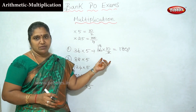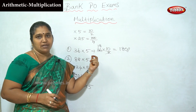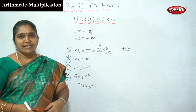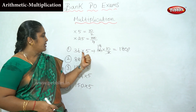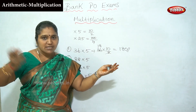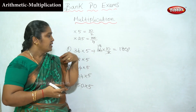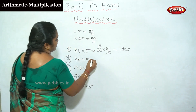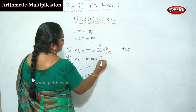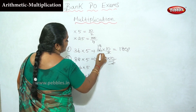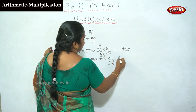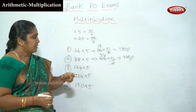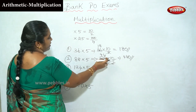We multiply by 5 using this method. For example, 88 into 5: use 10 by 2, so 88 into 10 is 880, divided by 2 is 440. For 124 into 5: 124 into 10 is 1240, divided by 2 is 620. Add zero: the answer is 620.